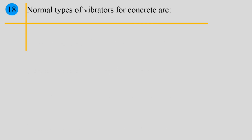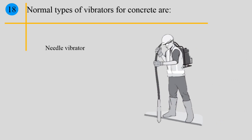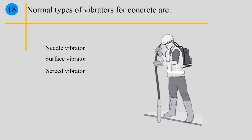Point 18: Normal types of vibrators for concrete are Needle Vibrators, Surface Vibrators, Screed Vibrators, External Vibrators, Table Vibrators, and Formwork Vibrators.